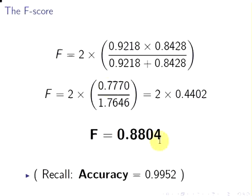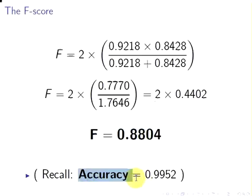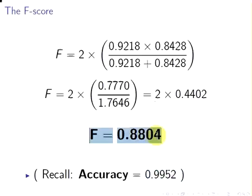You might get slightly different values depending on how you calculate it — I used a computer with greater precision than four decimal places. Ultimately you should get something close to 2 times 0.4402. So for this classification procedure, the F-score was 0.8804. Compare that with the accuracy of 0.9952 found earlier — the F-score of 0.8804 shows there's much more room for improvement than the accuracy alone would suggest. That ends our presentation. Take care.